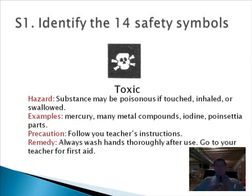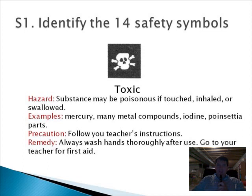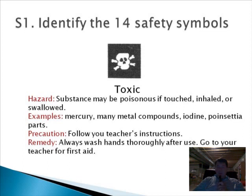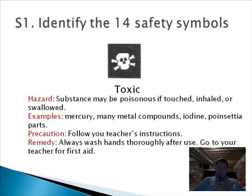The next chemical symbol is toxic — the most dangerous of our chemicals. This substance could cause death if, for example, swallowed. Common sense applies: you're not going to be drinking poison, but you need to be aware that it is dangerous and there's potential for getting sick. Examples include mercury, many metal compounds, iodine, and poinsettia parts. When we use these chemicals, we'll give you special instructions. Always wash your hands after the lab so you don't transfer any chemicals to your food.